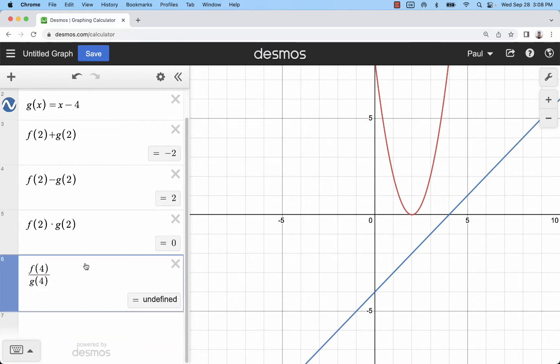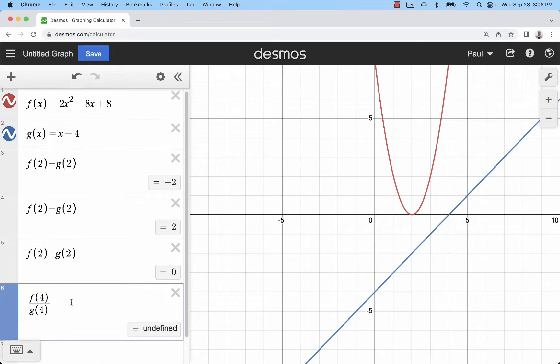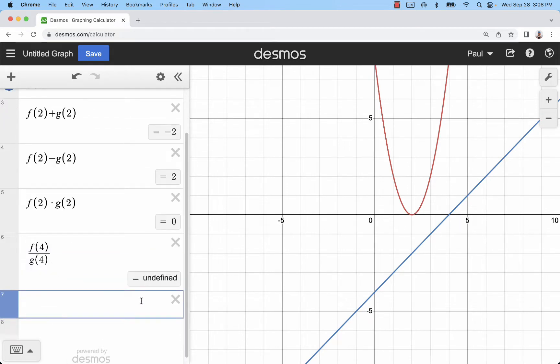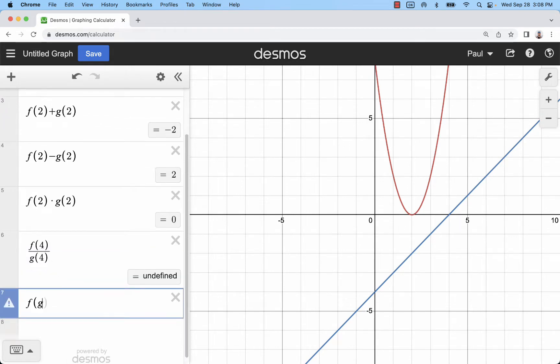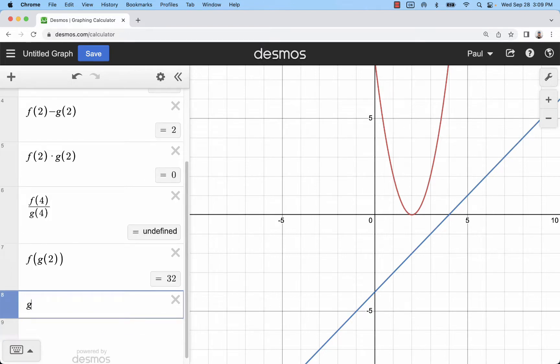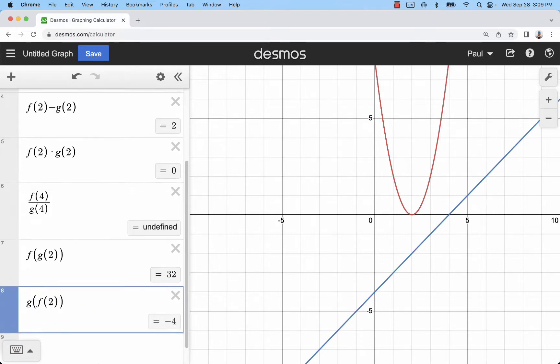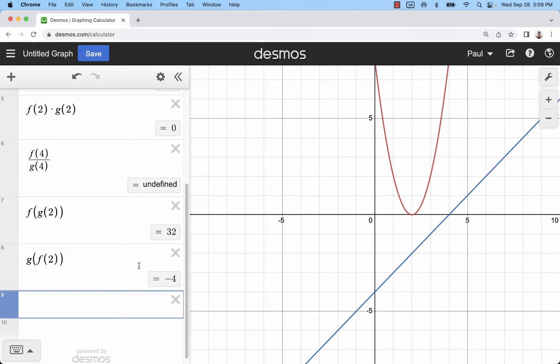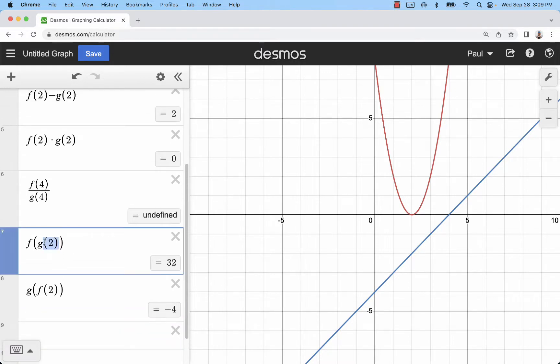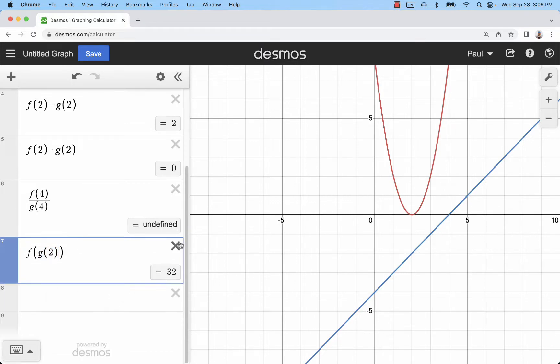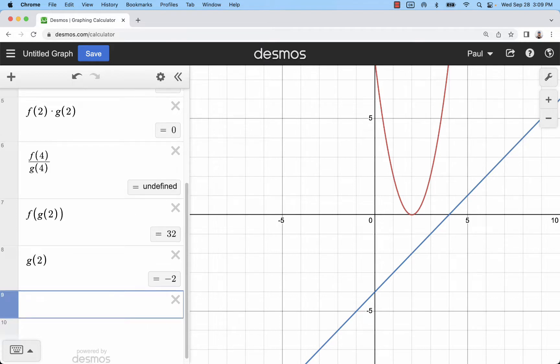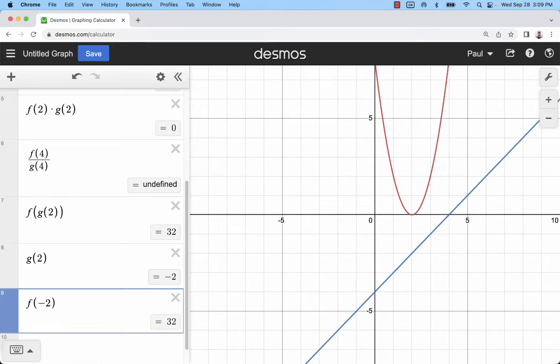The last thing that we can do with these combinations is actually a composition of functions. So we can do f(g(2)) or g(f(2)). Those are different results. So what it's doing is it's plugging in 2 into the g function and then the result into the f function. So we can see that kind of piece by piece. If we do g(2), that's -2. And then f(-2) is that 32.